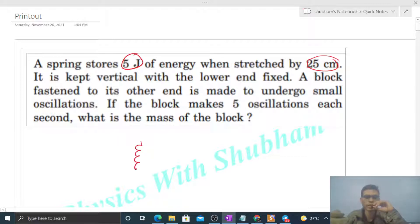We have a vertical spring this way, and here we have a block. The lower end of the spring is fixed. The spring constant is not given, but it is given that 5 joules of energy is stored when the spring is stretched by 25 centimeters.